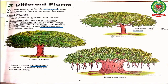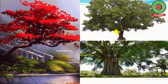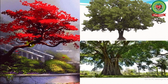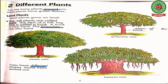The stem of a tall, big tree is called a trunk. The stem that grows above the ground is called a trunk, and it is generally brown in color. As you can see in your book: the trunk of a school tree, the trunk of a banyan tree — a trunk is very hard.